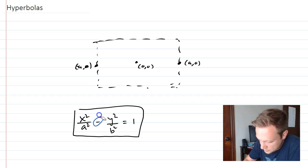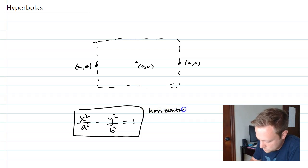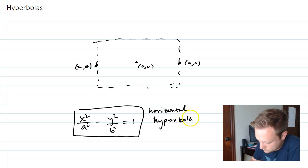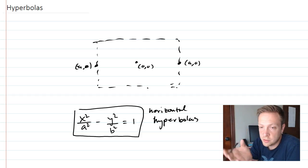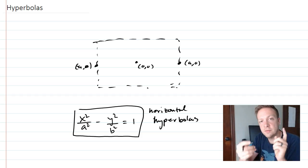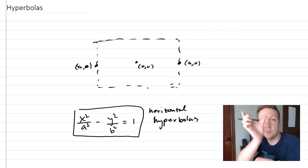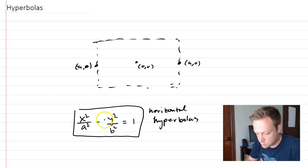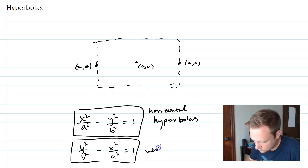This equation is for horizontal hyperbolas. Like parabolas, if you want it tilting to the side or up, you have to swap your x and y. This version opens up to the sides. If you wanted it opening up and below, you swap so that y squared over b squared minus x squared over a squared equals 1. That would be the vertical version.